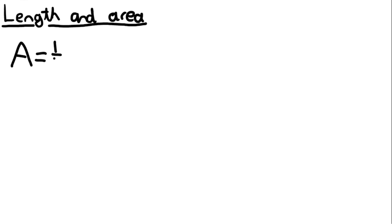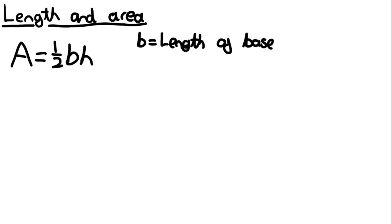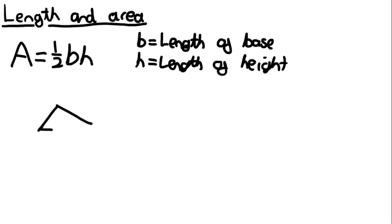A very common exam question they could ask you is to find the area of an enclosed shape — I've only ever seen them ask for areas of triangles. To find the area of a triangle, you use the formula A equals half BH, where B is the length of the base and H is the length of the height of the triangle.